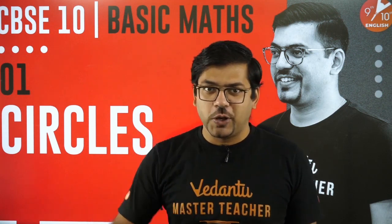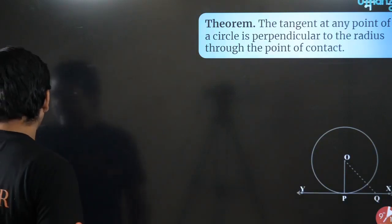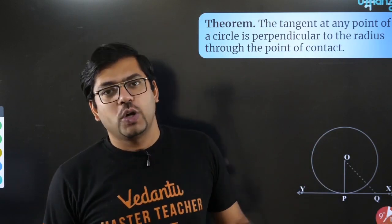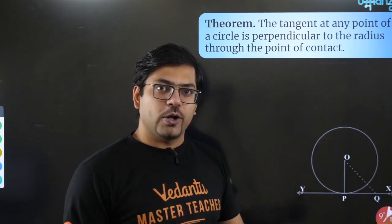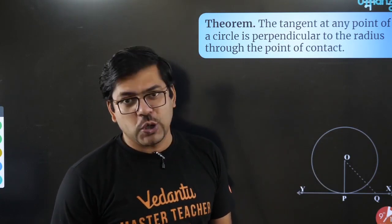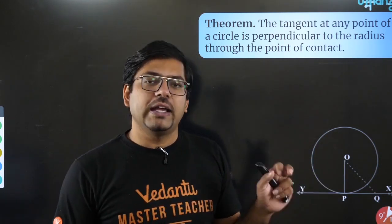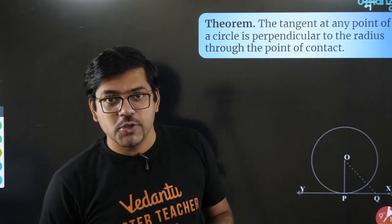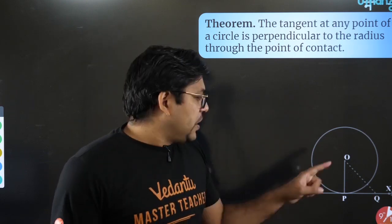The first theorem is that in a circle, the radius is always perpendicular to the tangent. Always remember this. I'm pretty sure most of you already know this, but if not, please learn it. The proof of this theorem has very low probability of coming in your examination, but I'll explain it briefly.